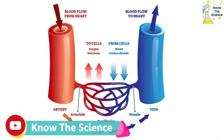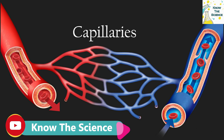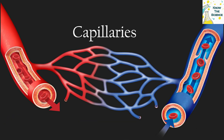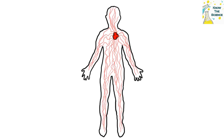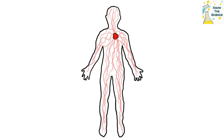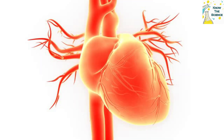The large blood vessels that carry oxygen-rich blood away from the heart are called arteries. These blood vessels are thick-walled, strong, durable, and elastic, able to withstand the high pressures exerted by blood as it is pumped by the heart. Oxygen-rich blood leaves the left side of the heart and reaches the aorta, which separates into arteries that gradually branch into smaller arterioles, delivering blood and oxygen to the capillaries.